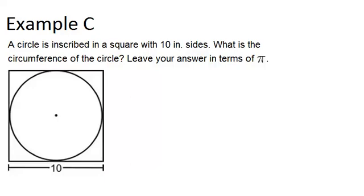Inscribed in a square just means that the circle is exactly inside the square such that it touches the square on all four sides. We have the picture here to see. What we know is that the sides of the square are 10 inches long.